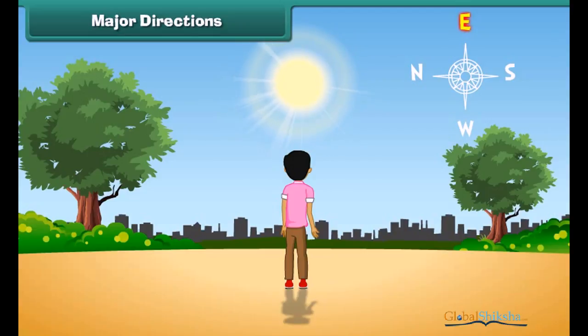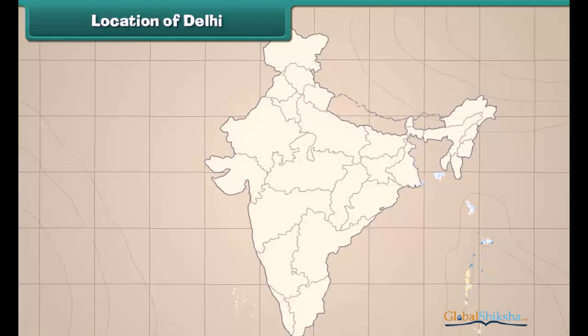This is J. He is standing facing the sun. The sun rises in the east. Therefore, east is in front of him. It means west is behind him. North is to his left, south is to his right.